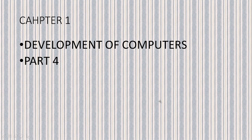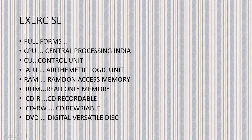Today I am going to teach you chapter 1. As you all know, I already explained chapter 1 — part 1, 2, and 3. In part 1, I talked about early calculating devices. In part 2, I taught modern computers. And in part 3, I talked about memories. Now in part 4, we are going to do the exercise. We will fill in the exercises regarding this chapter — I will complete all the exercises mentioned in this chapter.